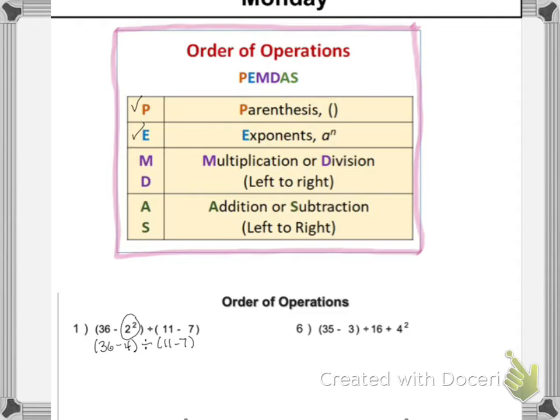Divided by 11 minus 7. So now we've taken care of the exponents. Now remember, we are still within the parentheses. So in my parentheses, I don't see any multiplication or division, but I do see addition and subtraction. So 36 minus 4 leaves me with 32, divided by 11 minus 7, which leaves me with 4.